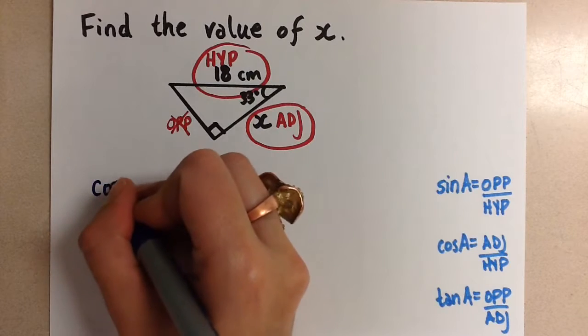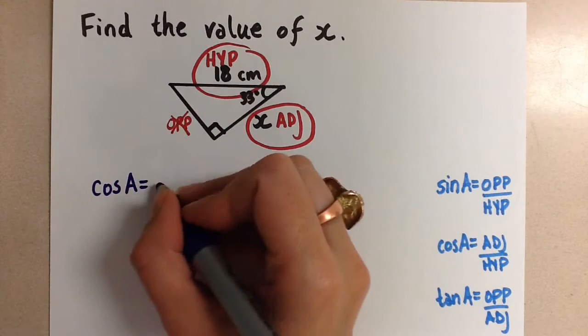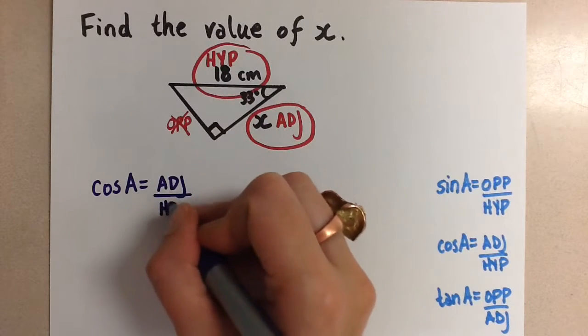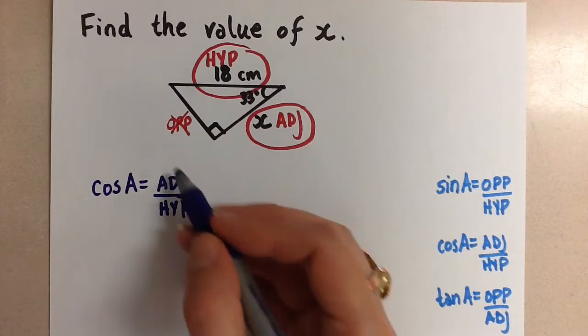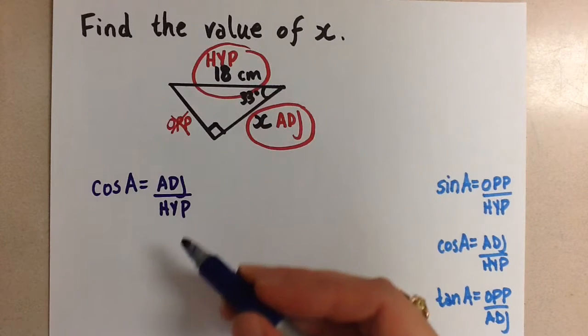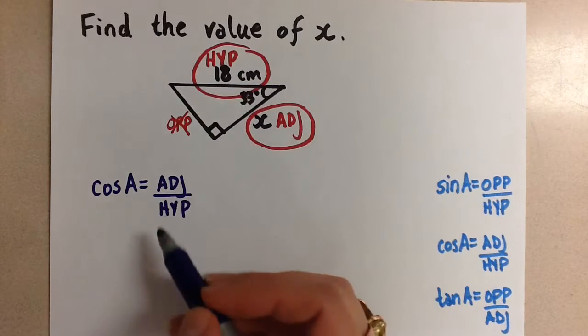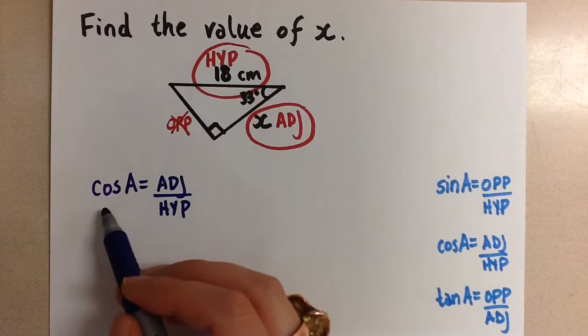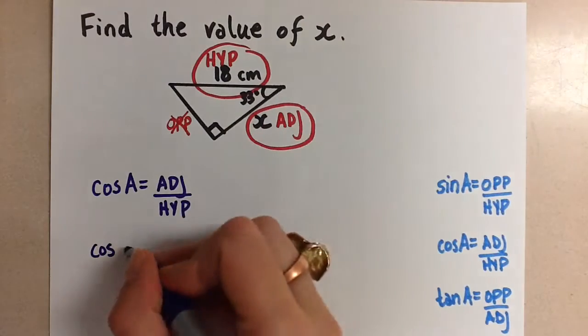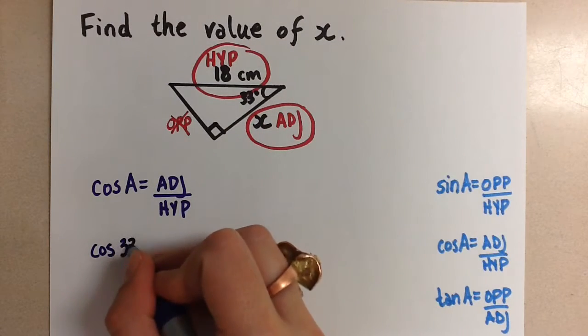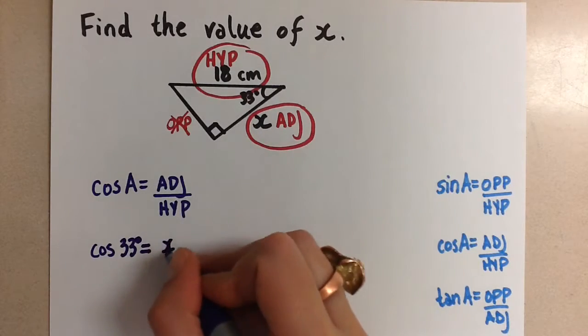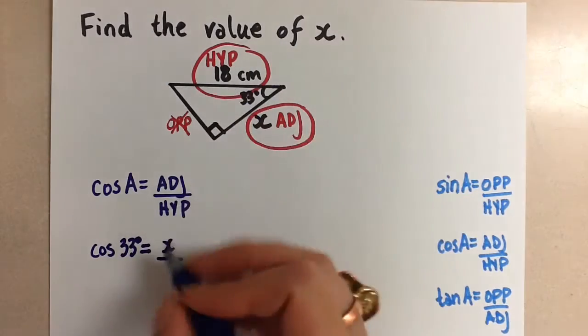We'll write down the formula. Cosine A, that's the angle, equals adjacent side divided by hypotenuse side. Now our formula is our template for the work, so we have to follow this template when we do our next line. We're going to fill in now what we know. Cosine, the angle is 33 degrees, so we'll fill that in, equals the adjacent side is x, and the hypotenuse side is 18.